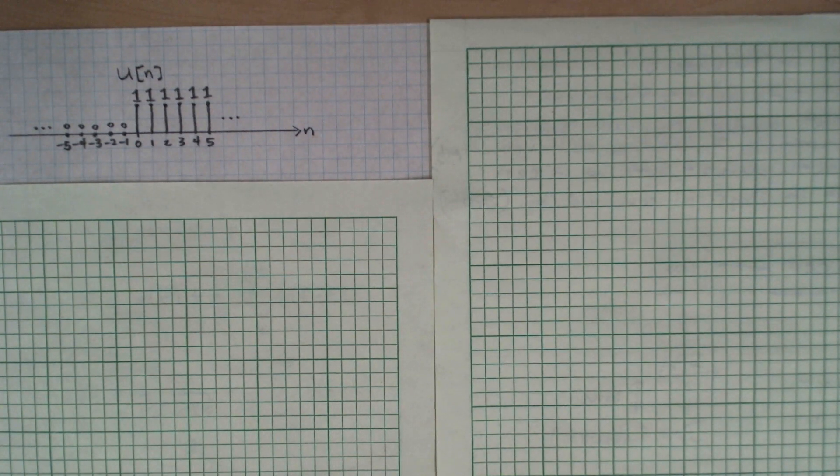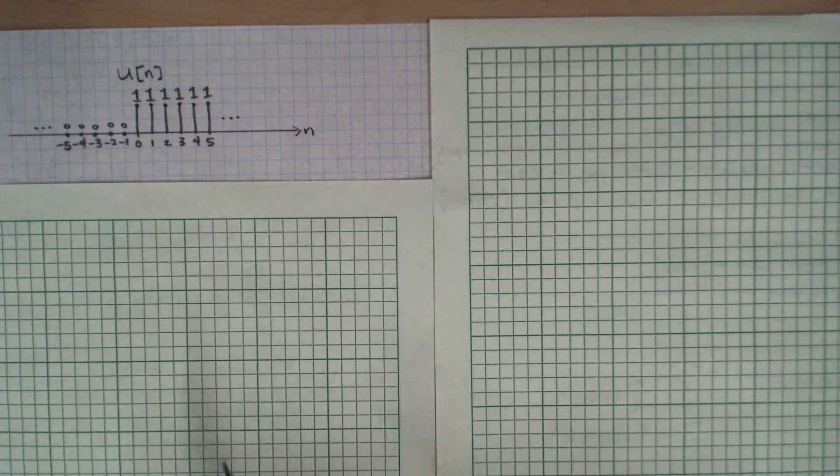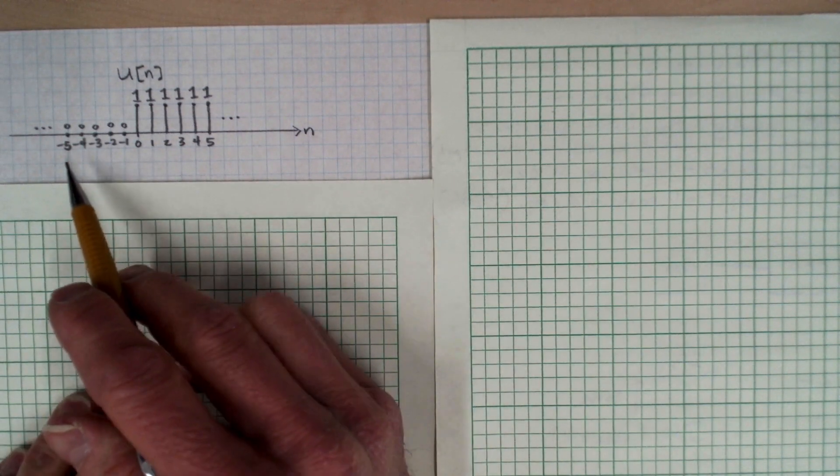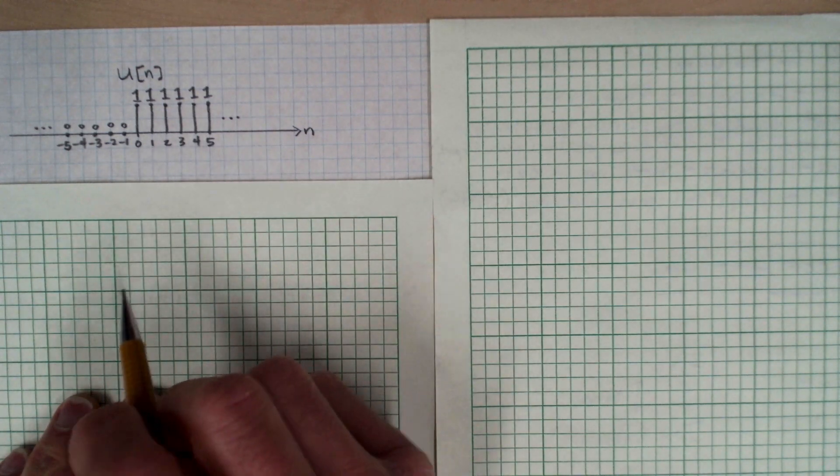In this video, we learn how to calculate the Fourier transform of the discrete time unit step function, which I've drawn here. The step function is zero for negative times, and then it takes on the value of plus one for all of the positive integers.